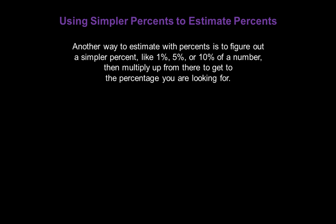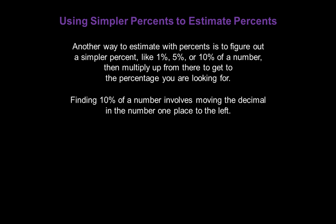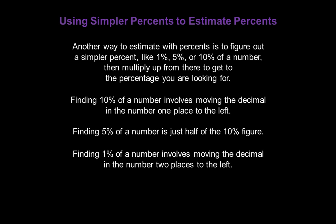Another way to estimate with percents is to figure out a simpler percent — like 1%, 5%, or 10% of a number — then multiply up from there to get to the percentage you're looking for. Finding 10% of a number is fairly easy; it involves moving the decimal in the number just one place to the left. Finding 5% of a number is just half of the 10% figure. And finding 1% of a number involves moving the decimal two places to the left.